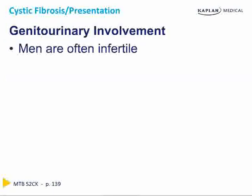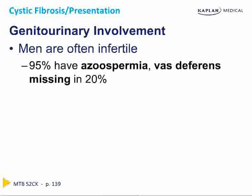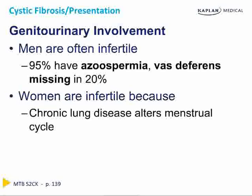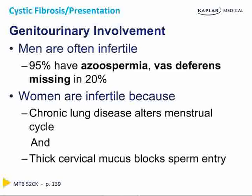The GU involvement in CF will leave men infertile — 95% of cases are because of azoospermia, and the vas deferens are simply missing in 20% of men with CF. Women lose fertility because of chronic lung disease that alters the menstrual cycle, and patients have thick cervical mucus that blocks sperm from entering the uterus.